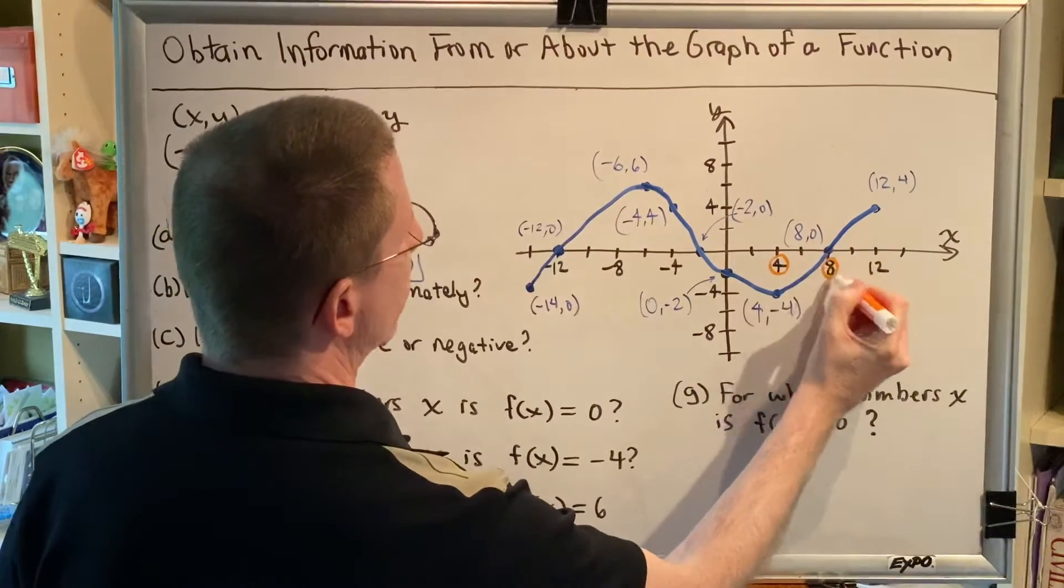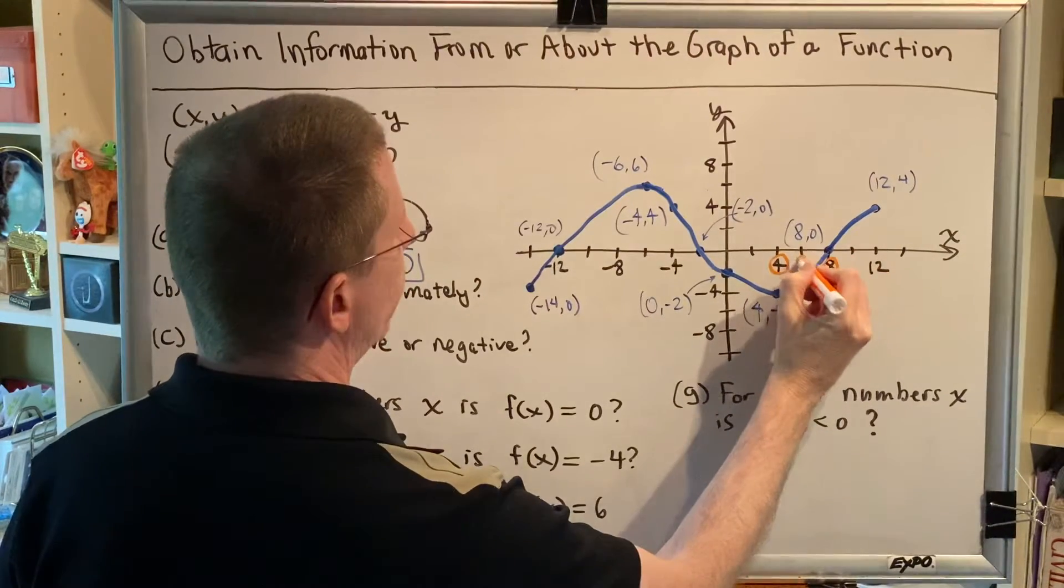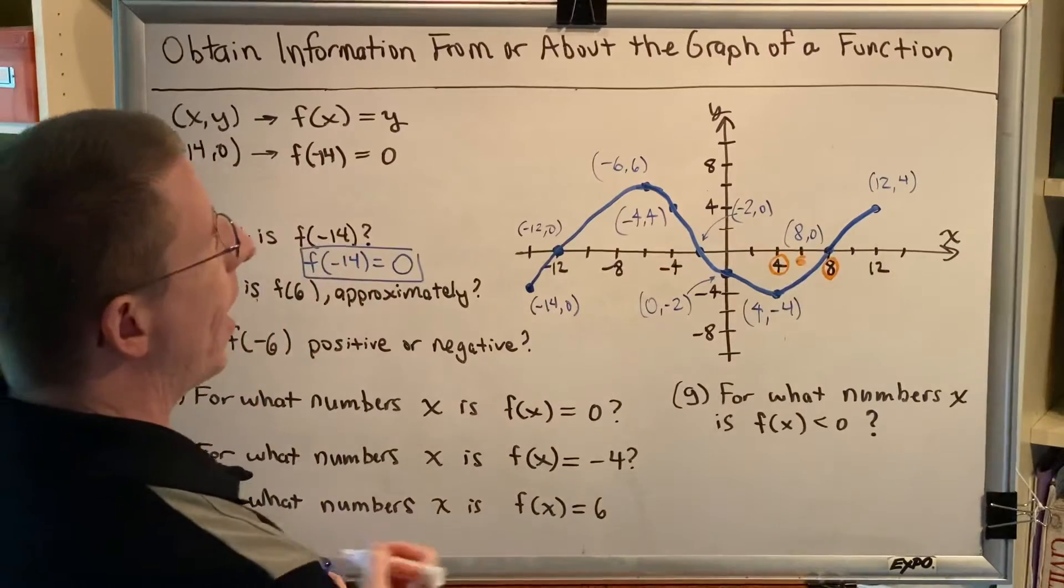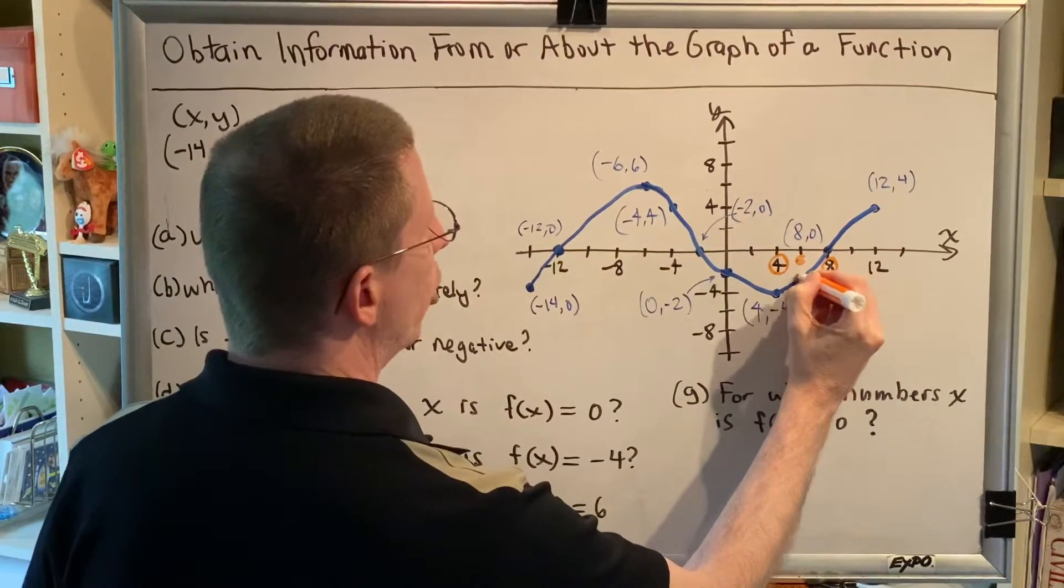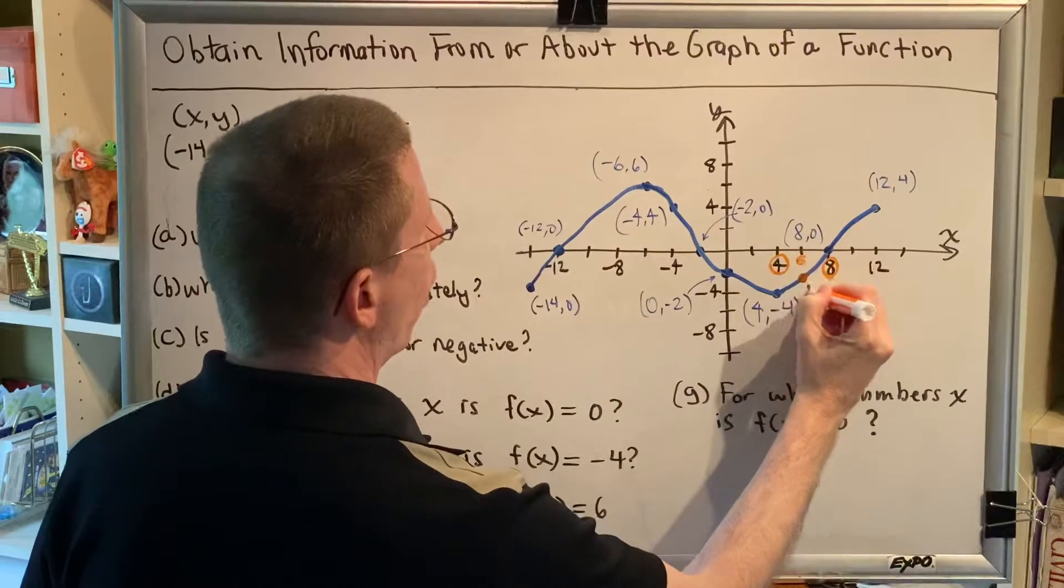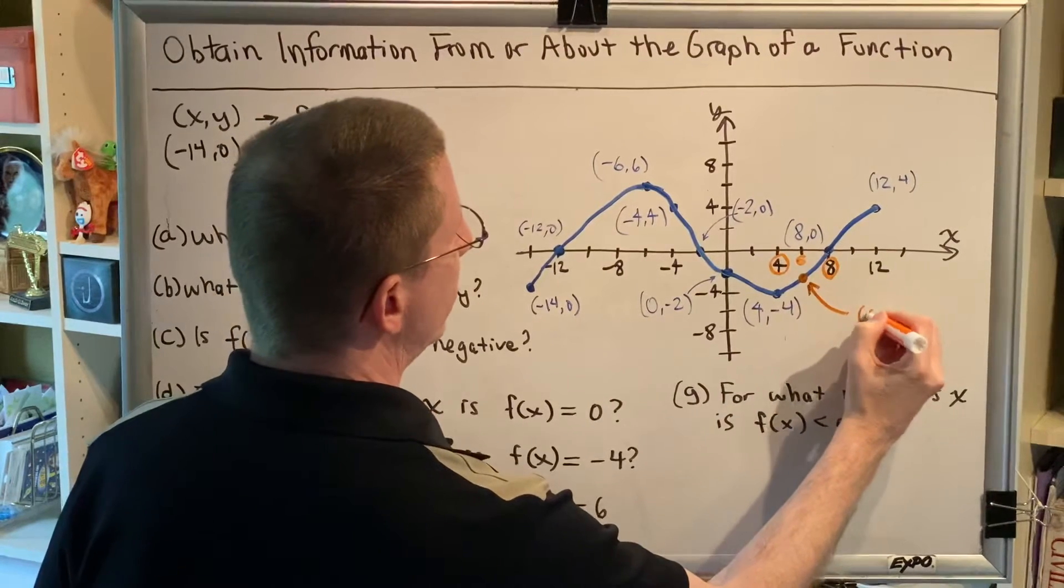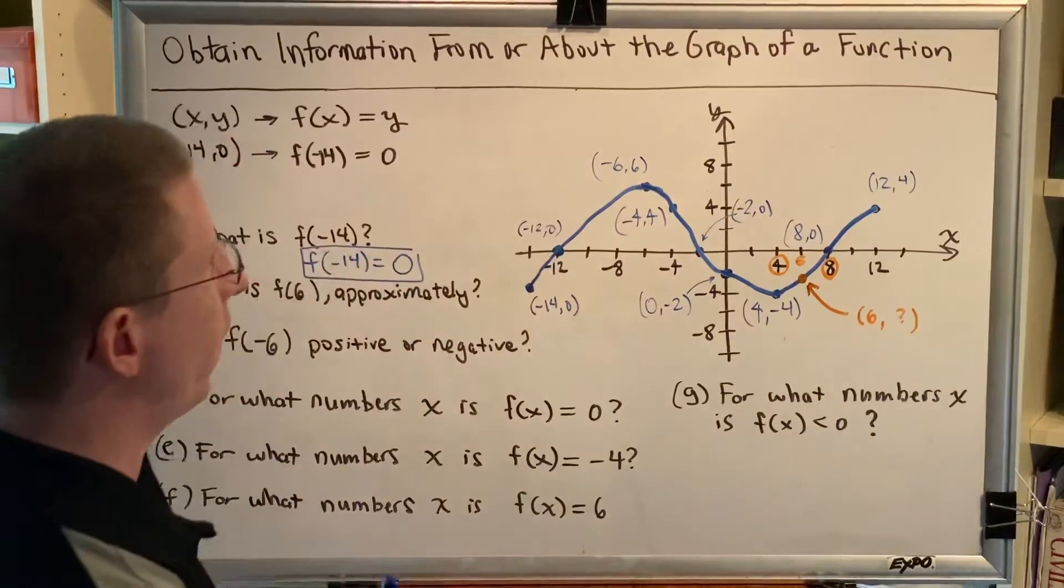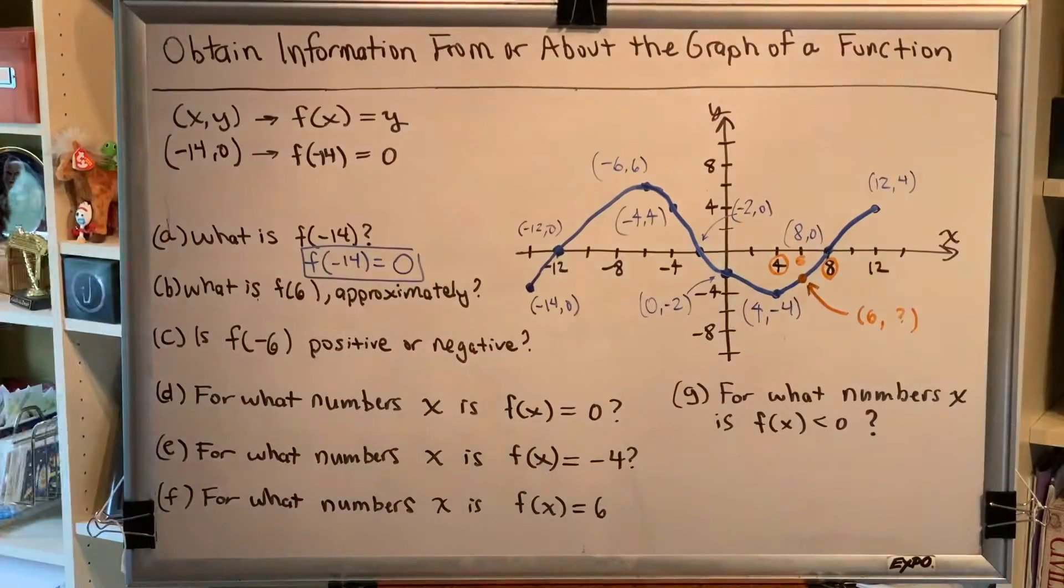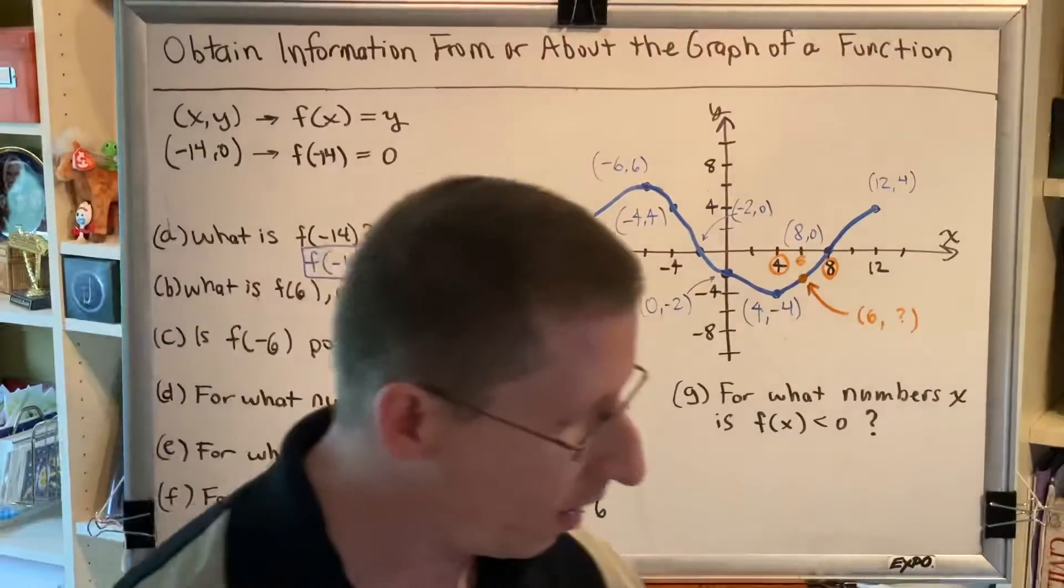So 6 must be halfway in between, which would be at this spot. And if you follow that vertically downward until you reach your blue curve, you find this dot right here on the graph. This is 6 comma something. Our job is to figure out what is the something, what is the y coordinate of that point?